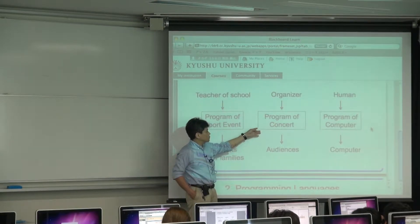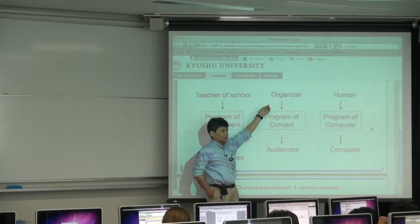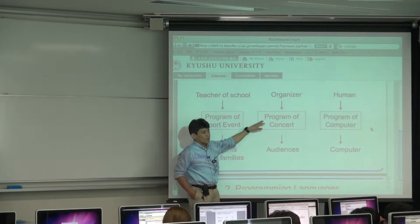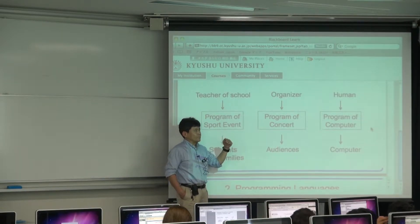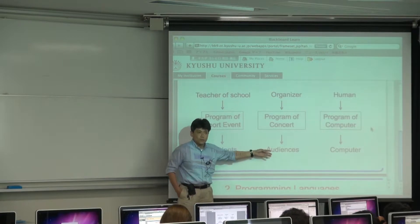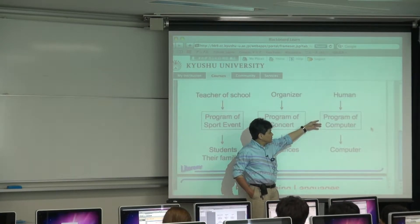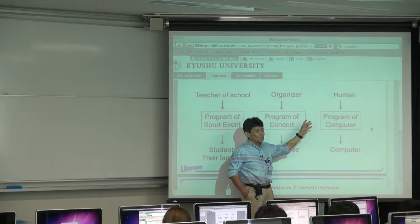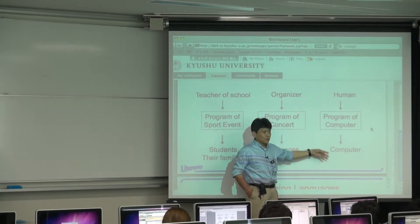Another example is a musical concert. The organizers or companies that provide such events have to provide a program for the concert. In this case, the program has a list of the music actually performed in the concert for the audience. In computer systems, a program is actually a program performed on the computer. Usually, a human provides such programs for the computers.